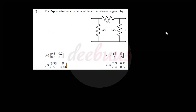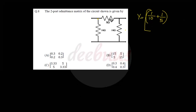Moving to the third question: the two-port admittance matrix of the delta network. The Y-matrix parameters are: Y11 equals 1/10 plus 1/5; Y12 equals minus 1/5 (only the shared admittance between node 1 and node 2); Y21 equals minus 1/5; and Y22 equals 1/5 plus 1/10.